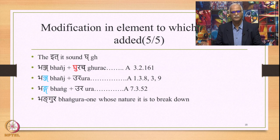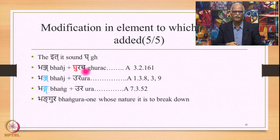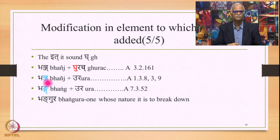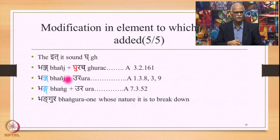Let us look at the last example in this function: the ith sound gha. We have the verbal root bhanja meaning 'to break,' to which is added the suffix ghurac by 3.2.161, in which gha is ith by 1.3.8 and cha is ith by 1.3.8; both get deleted by 1.3.9, giving the suffix ura. So we have bhanja plus ura. The substituent jha is changed to gha, and because of this gha, the yha is also changed to ngha, giving the form bhangura — meaning 'one whose nature it is to break down.' This substitution is caused by the ith sound gha.